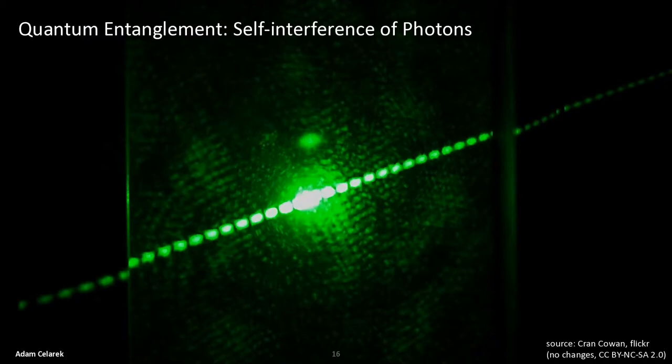In here we see quantum entanglement. The photo shows the interference pattern produced by a green 532 nanometer laser beam passing around a wire of a thickness of 0.254 millimeters at a distance of about 4.5 meters from the wall acting as a screen. The interference pattern is created by individual photons interfering with themselves. It occurs even when the intensity of the light is so small that only one photon leaves the laser at a time.